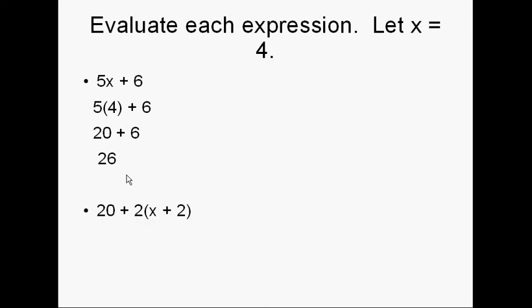Let's look at another one: 20 plus 2, and then inside these parentheses x plus 2. Remembering since there's no symbol between the 2 and the parentheses, that means we're going to multiply. Since x equals 4, I'm going to put 4 down in here for x. Order of operations tells us to do 4 plus 2 first, the stuff inside the parentheses. So that gives me 20 plus 2 times 6. The next thing I do is the multiplication. 2 times 6 is 12, so 20 plus 12 equals 32.